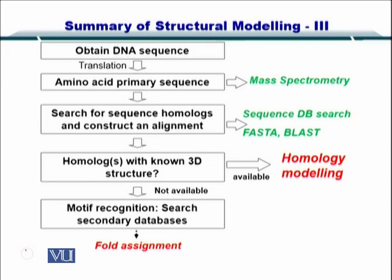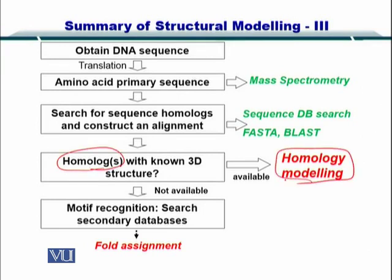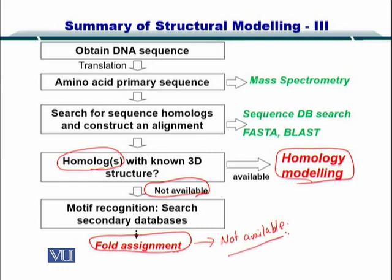You know that if you have the protein sequence and you find very nice homologues from the PDB, then you can do homology modeling. But if you could not find such homologues, then you can go towards fold assignment or fold recognition. But there can be a case where such folds are also not available, so you are left with no way to use homology modeling or fold recognition. In such a case, you go for ab initio modeling.